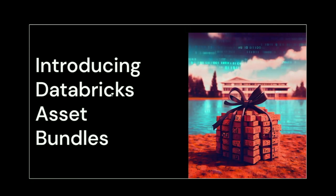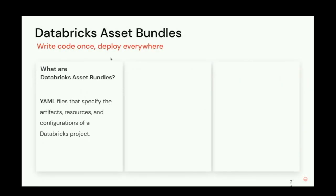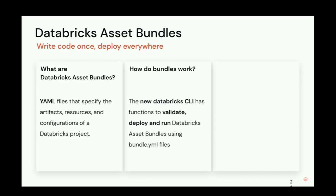We're very excited to introduce Databricks Asset Bundles — our way to solve this problem and democratize the way that people get their assets into production. The idea is you'll write code once and deploy it everywhere. Databricks Asset Bundles are YAML files that specify all of the resources, artifacts, and configurations of the work that you're doing in Databricks. You use the new Databricks CLI to validate, deploy, and run all of your assets using those YAML files. They're useful both during the development process and as part of CI/CD pipelines.